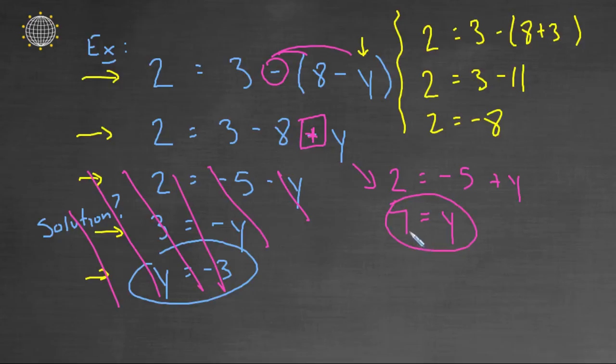Now we can try to verify this one. Does 2 equal 3 minus the quantity (8 minus 7)? Well, 8 minus 7 is 1, and 3 minus 1 really is 2. So yes, it is a solution.